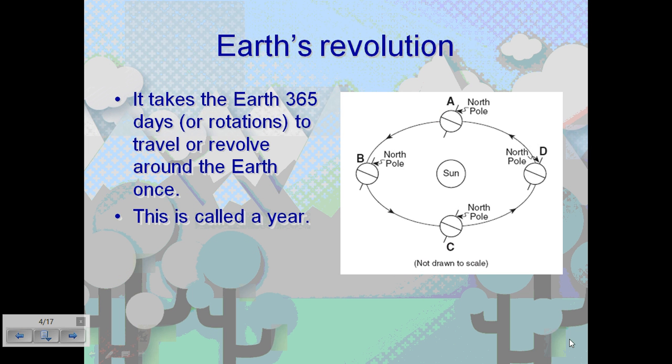Earth's revolution. It takes the Earth 365 days, or 365 rotations, to travel or revolve around the sun once. This is called a year.